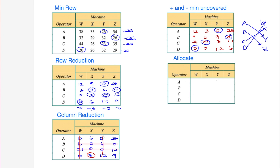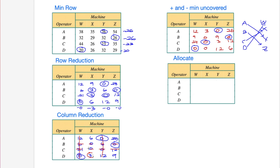Coming back to the earlier reduction matrix to prove the same result: there's definitely only one zero in that row, only one zero in this row, only one zero in this column, and therefore by default - even though there are two zeros elsewhere - there's only one option left for person C. They were better at more tasks overall, making them less restrictive to allocate. We end up with the exact same allocation either way.